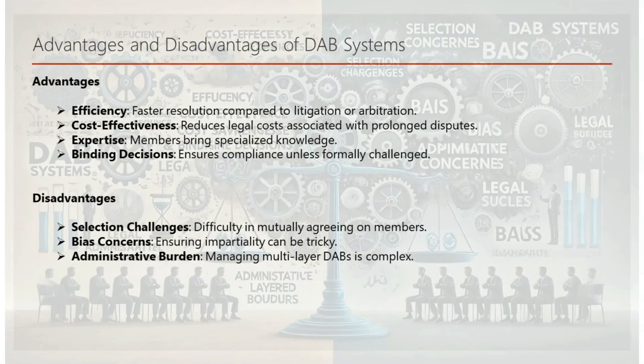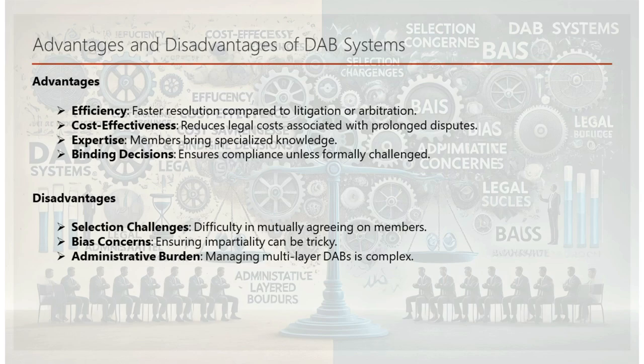Advantages of the DAB system include: efficiency — faster resolution compared to litigation or arbitration; cost-effectiveness — reduces legal costs associated with prolonged disputes; expertise — members bring specialized knowledge; and binding decisions that ensure compliance unless formally challenged. Disadvantages include: selection challenges in mutually agreeing on members, bias concerns as ensuring impartiality can be tricky, and administrative burden in managing multi-layered DABs. Understanding both benefits and drawbacks helps in making informed decisions about employing a DAB.